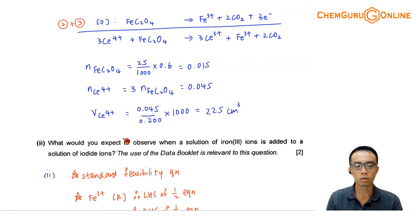Okay, for part 2, what would you expect to observe when solution of iron 3 ions added to solution of iodide? Iron 3 and iodide, you notice this question is a little bit simpler because they straight away focus on the ions that we need to consider.